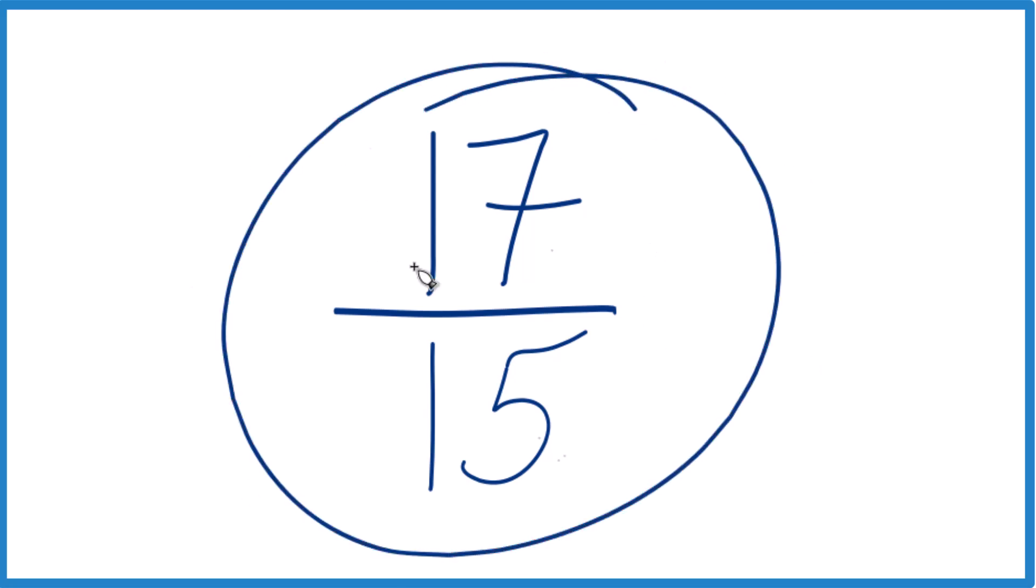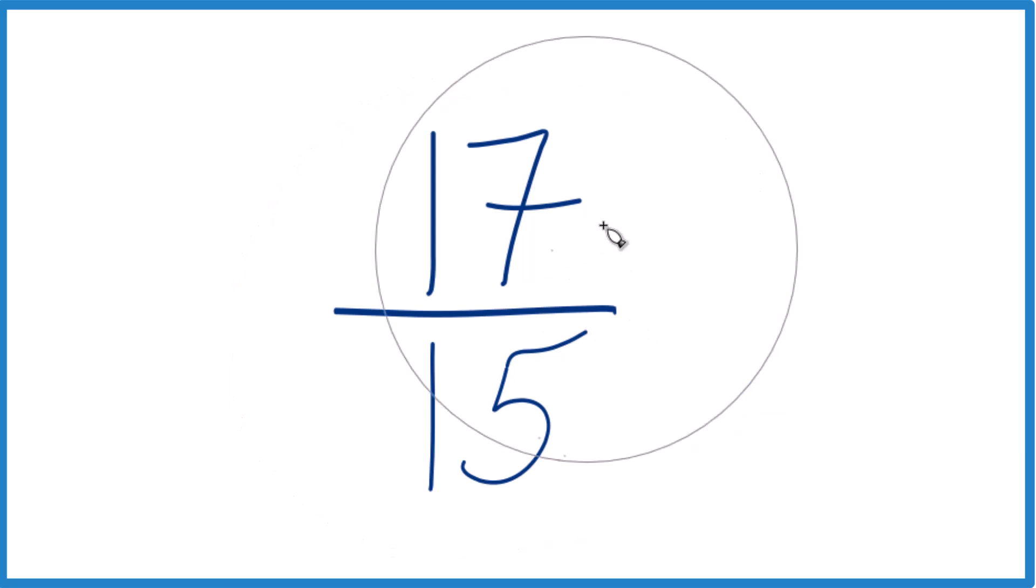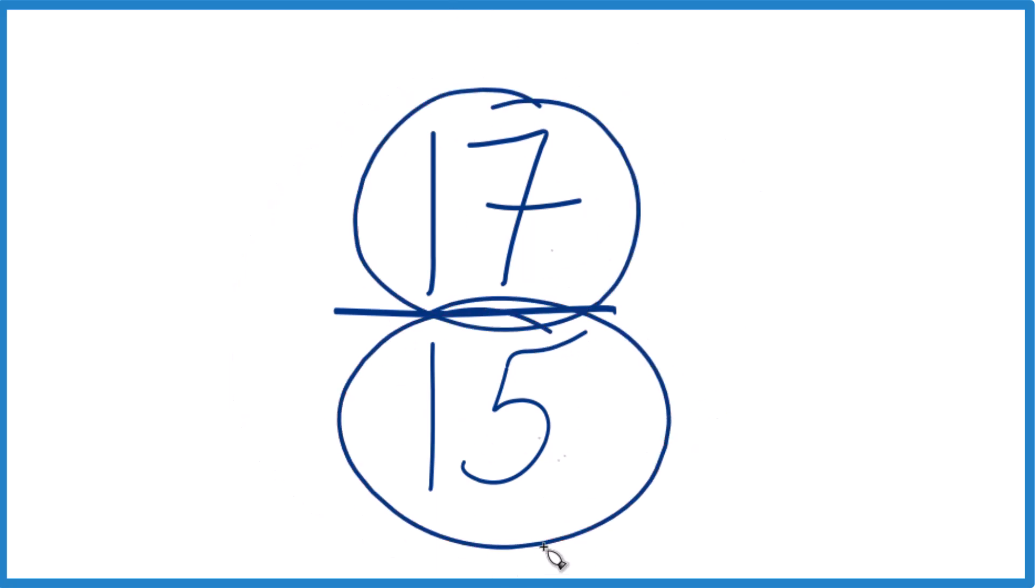That means this is already simplified. We can't reduce it any lower - it's in lowest terms. But because we have this numerator that's greater than the denominator, this is an improper fraction.